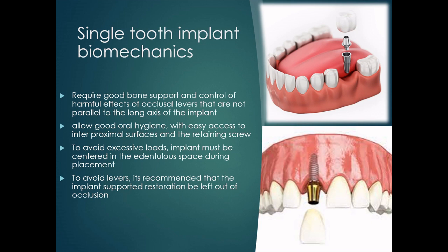If you want to replace a molar, it can be replaced with two standard diameter implants or one wide implant. In case of an anterior restoration, wider diameter implants are not advocated because it may compromise aesthetic results. In anterior single tooth restoration, a standard diameter implant is preferred since it provides a larger surface area for osseointegration compared to a narrow diameter implant. To avoid levers produced during parafunction, it is recommended that the implant-supported restoration should be left out of occlusion.